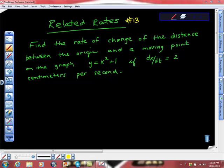Okay, AP Calculus AB, Related Rates, Problem Number 13. Find the rate of change of the distance between the origin and a moving point on the graph of y equals x squared plus 1 if dx dt is equal to 2 centimeters per second.